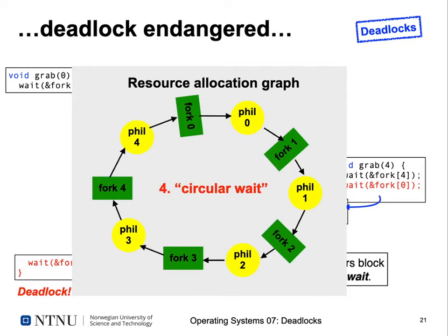Looking at the resource allocation graph: philosopher zero holds fork zero and waits for fork one. Philosopher one holds fork one and waits for fork two. Philosopher two holds fork two and waits for fork three, and so on until philosopher four, who waits for fork zero held by philosopher zero — closing the circle. All edges go in the same direction, always interconnecting a process and resource. This means the fourth condition, circular waiting, is fulfilled, so none of our philosophers can eat.